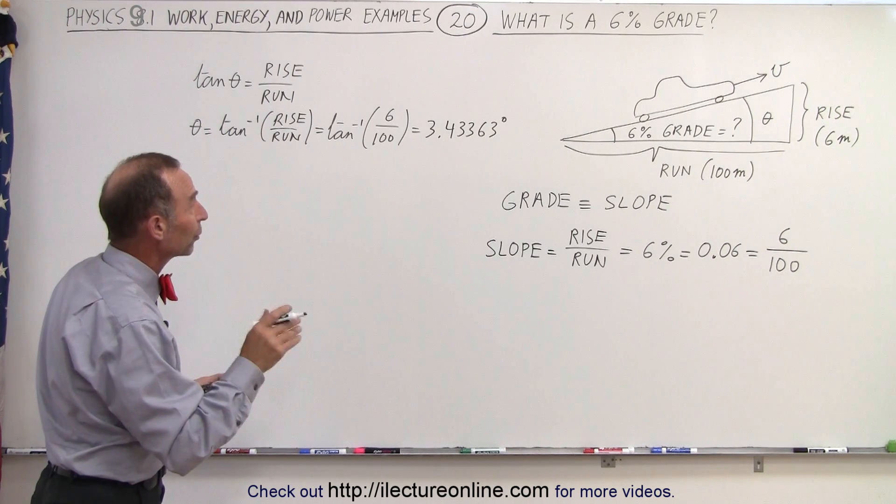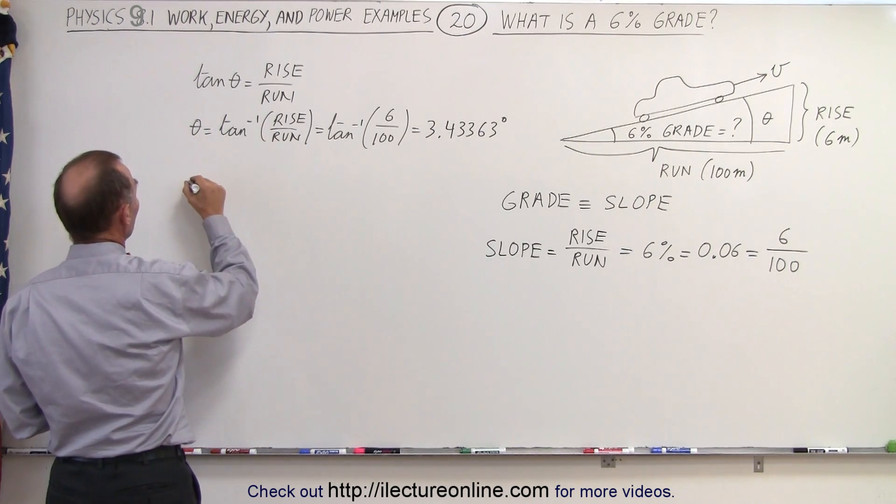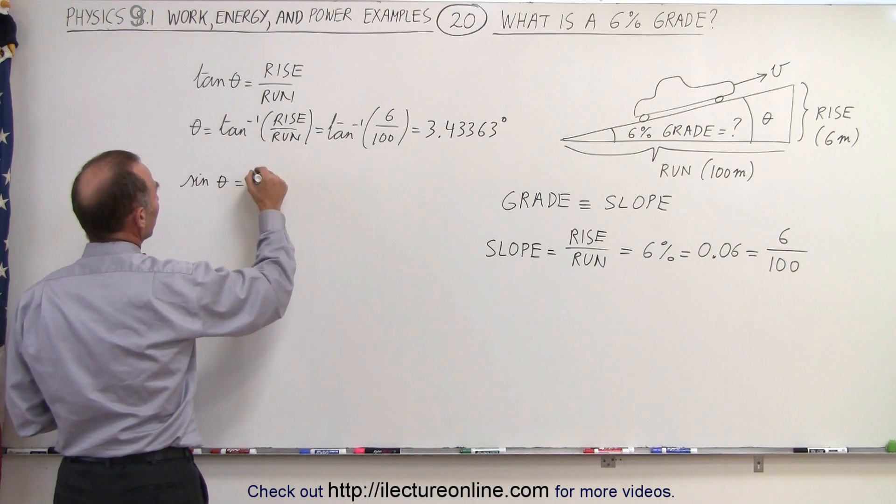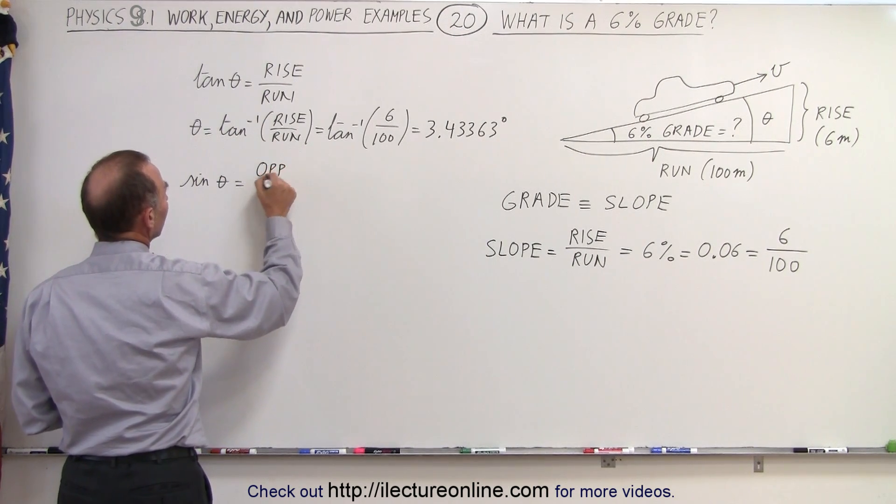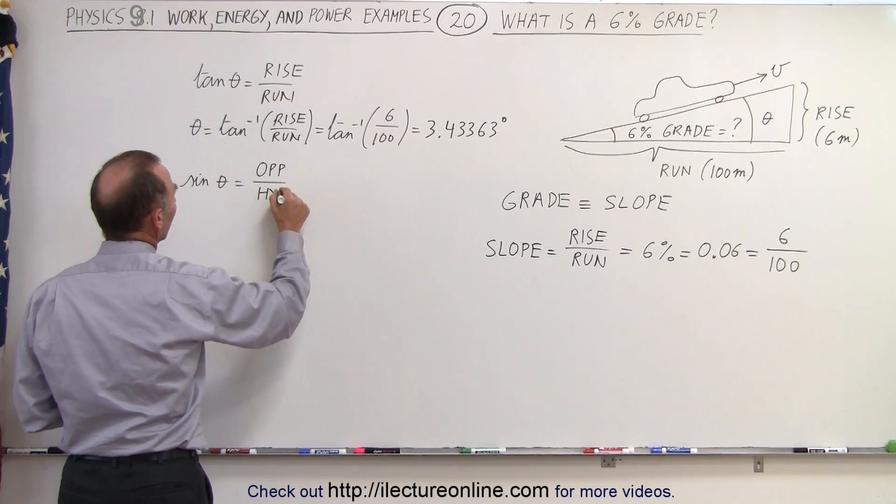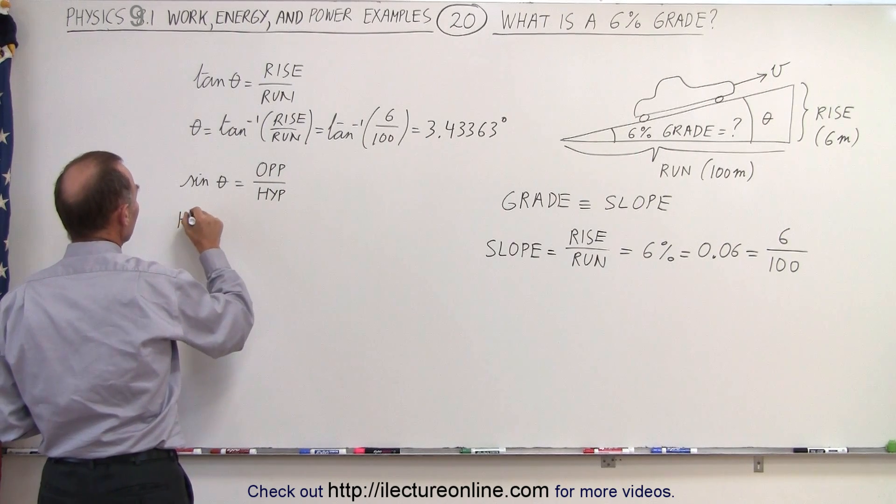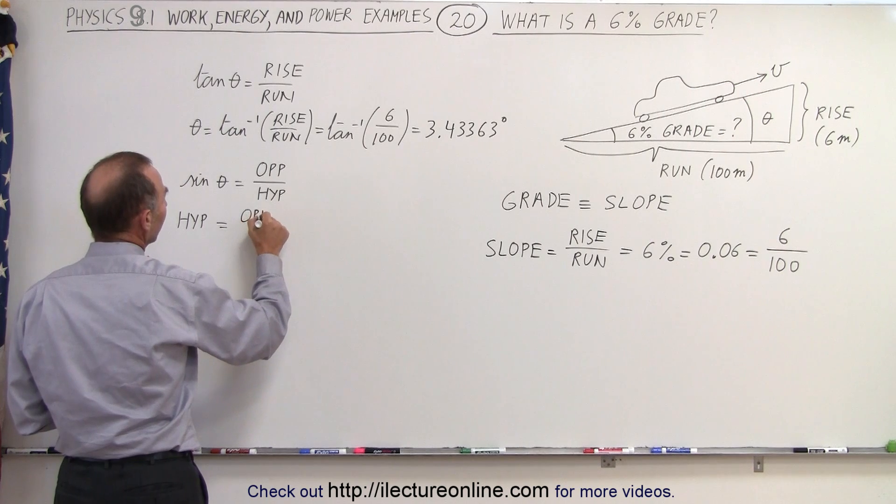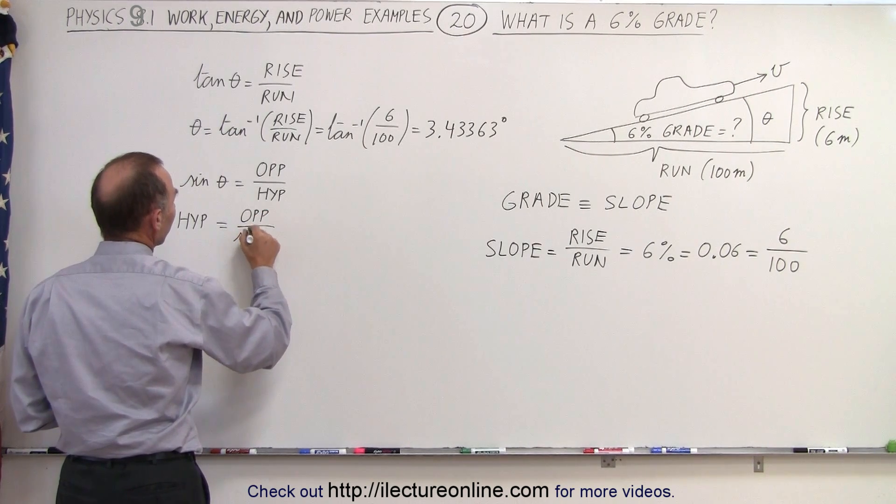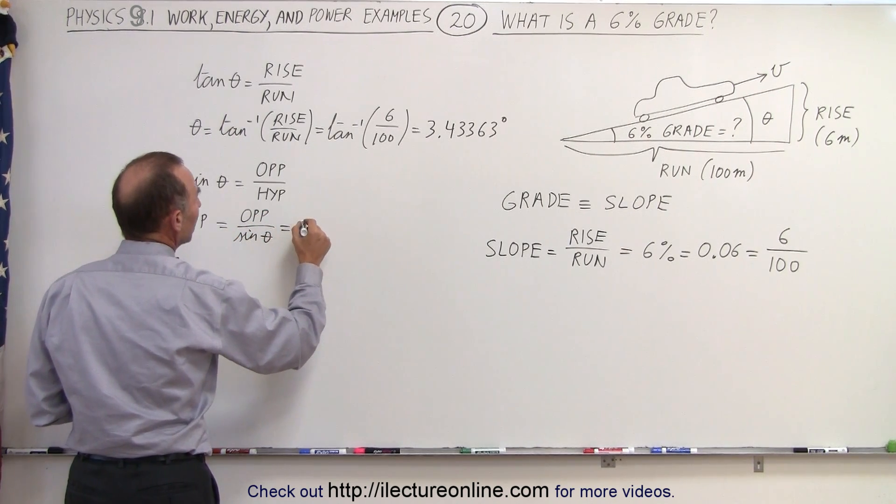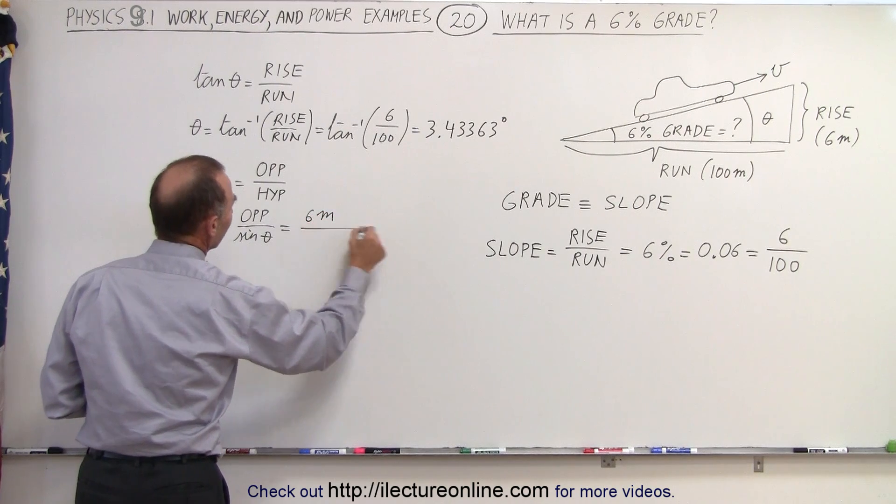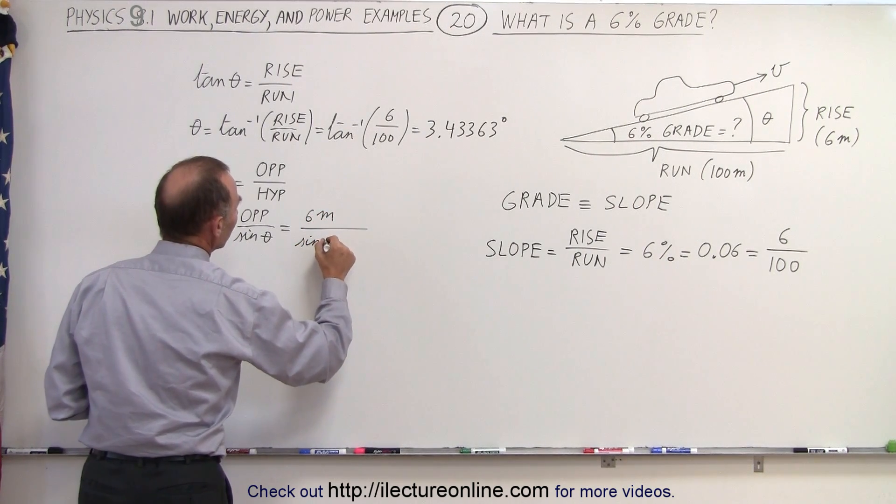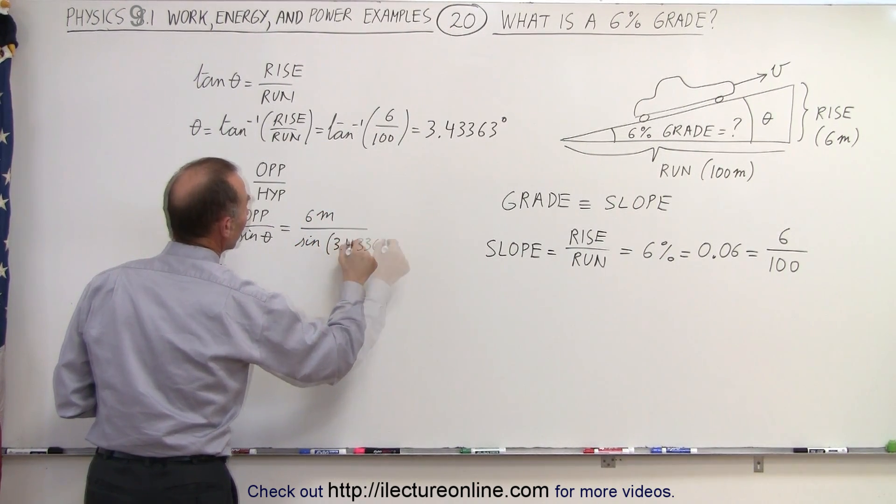So now what we're going to do is calculate the hypotenuse. So when we take the sine of theta by definition, that's equal to the ratio of the opposite side divided by the hypotenuse, which means that the hypotenuse, the distance traveled by the car, is equal to the opposite side divided by the sine of theta. So it's going to be equal to 6 meters divided by the sine of the angle that we just found, which is 3.3 degrees.